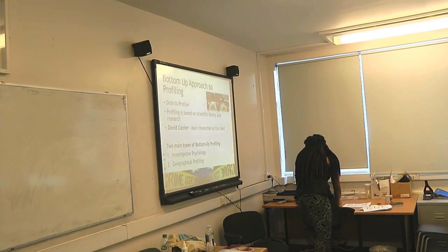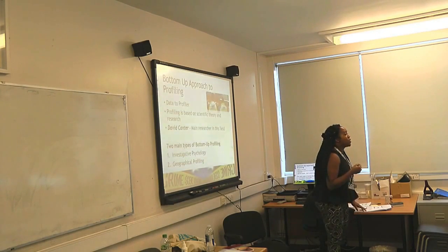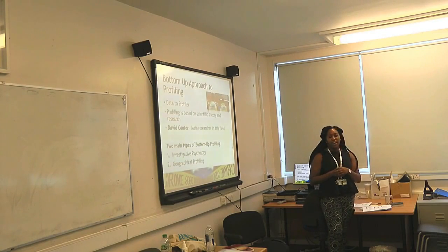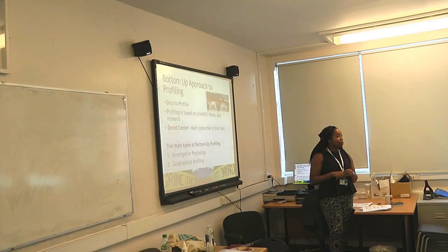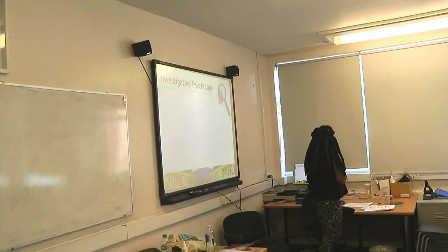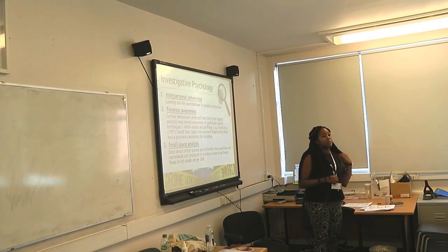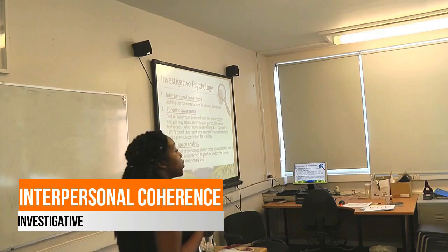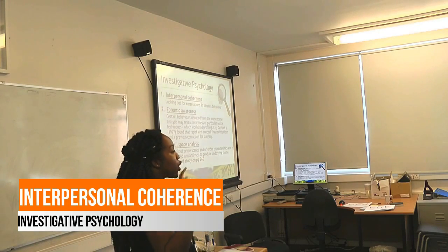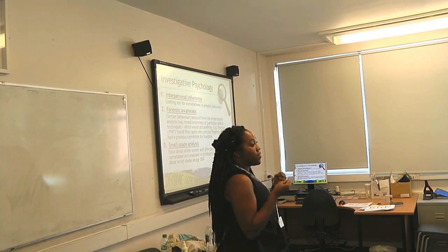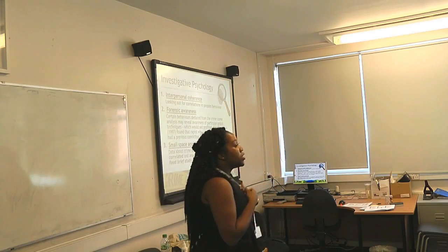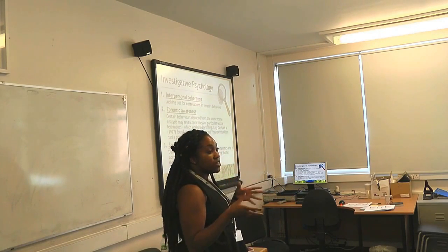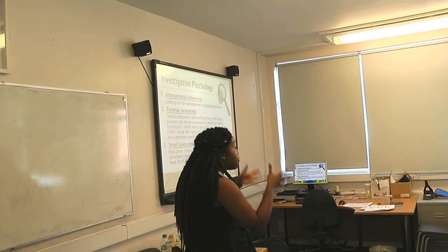With the bottom-up approach, there are two main types. The first one, which we touched on a little bit towards the end of our lesson, is investigative psychology, and the second one is geographical profiling. Under investigative psychology there are three steps. The first one is interpersonal coherence — that word coherence is when things actually tie in together, when they correlate with each other. So you're looking at the correlations between the crime and the offender's behavior.